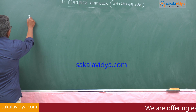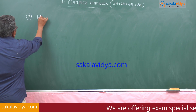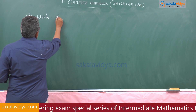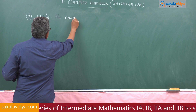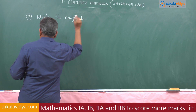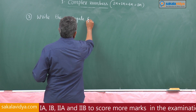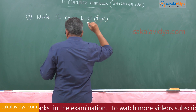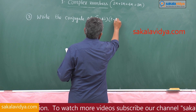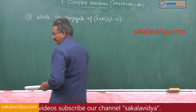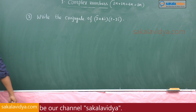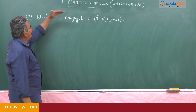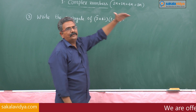Third problem: write the conjugate of (3 + 4i) into (2 - 3i).